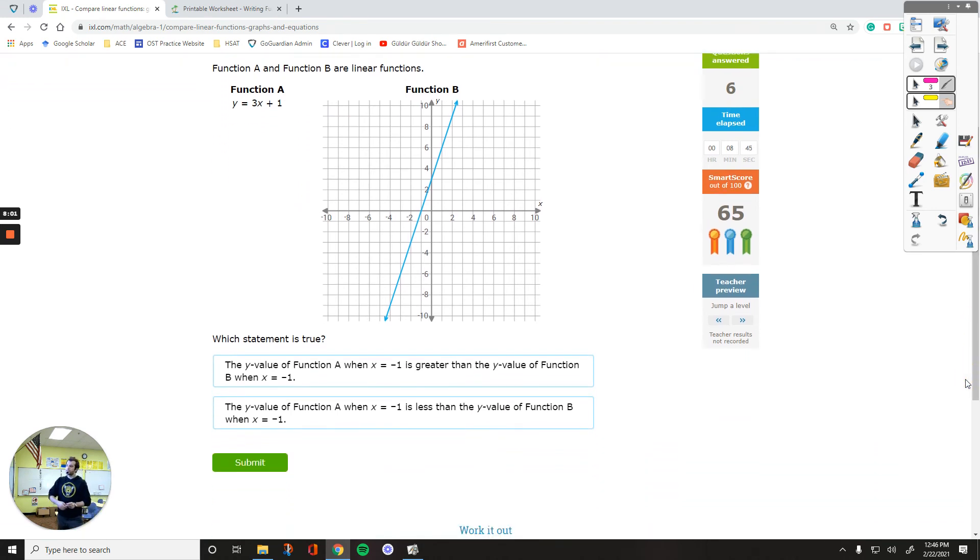This is the last one for this assignment. So the y value of function A when x equals negative 1. Figure this out. When x equals negative 1, what's the y value for A? And then when x equals negative 1, what's the y value for B?